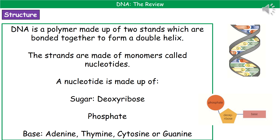The next thing we need to know is the actual structure of DNA. DNA is what's called a polymer, and that means it's made up of lots of smaller units called monomers. The DNA itself is made up of two strands, which are bonded together to form something called a double helix — and that's what you can see on the right hand side there.